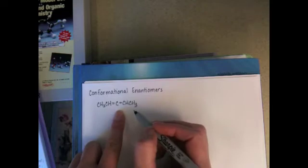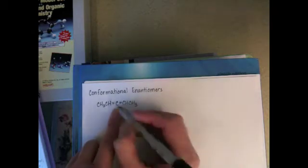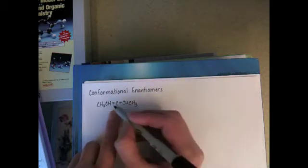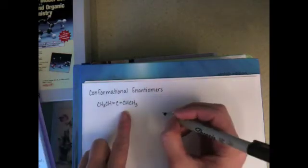Total lack of stereocenters usually means that the molecule is achiral. In the case of allene, because of the way the molecule twists around the carbon, double bond, carbon, double bond, carbon, it has a mirror image that's totally different.